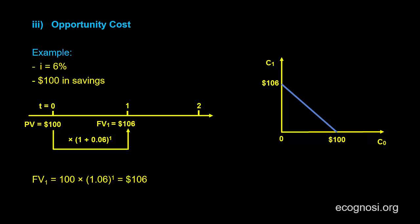In this example, assume that my bank offers an annual interest rate of 6%. Also, assume that I have $100 in savings. This $100 is in today's terms and thus can be interpreted as the present value. You can see this on the timeline as well.